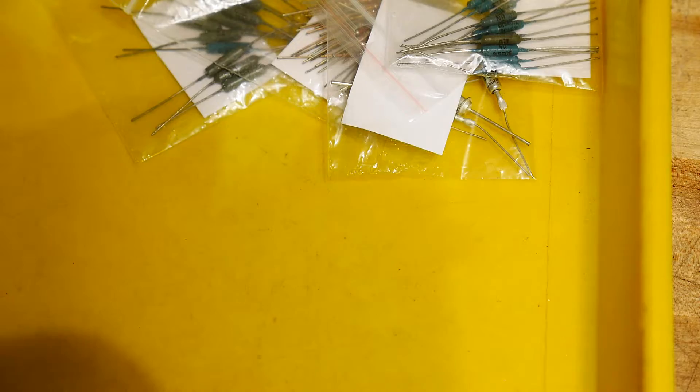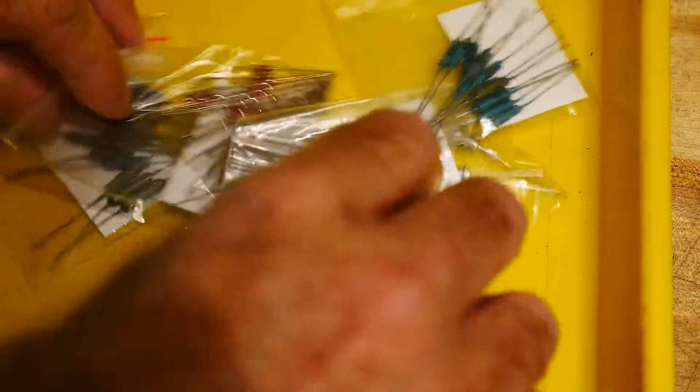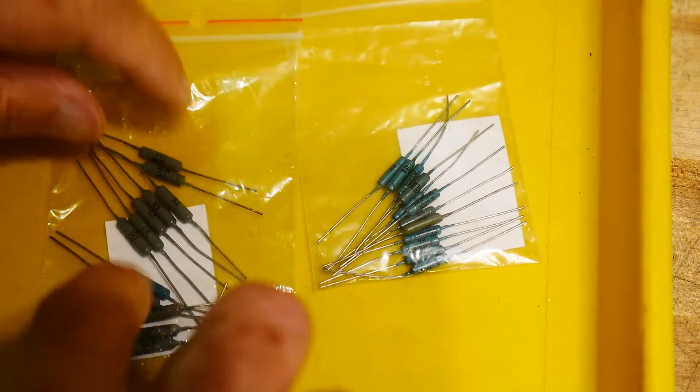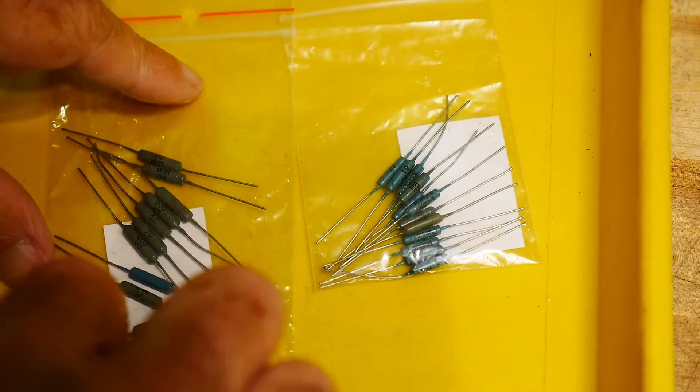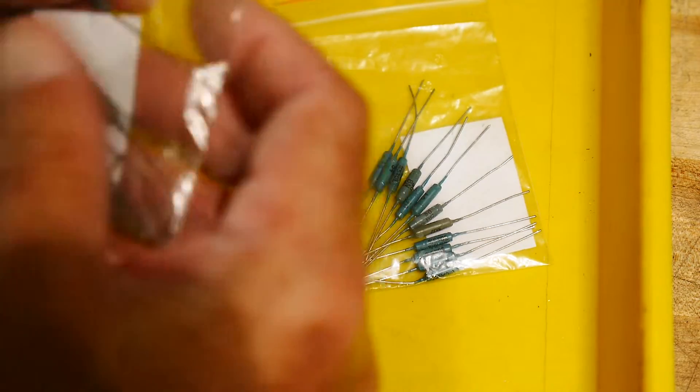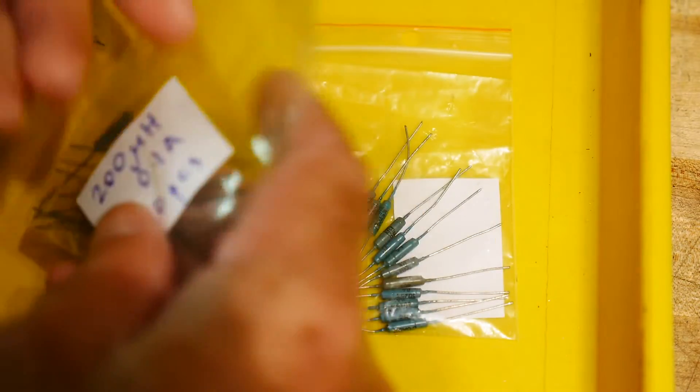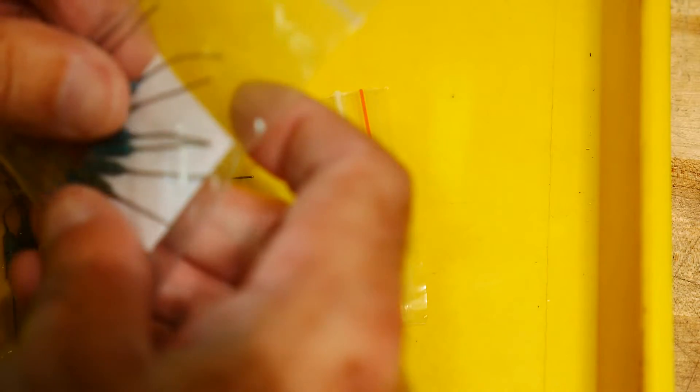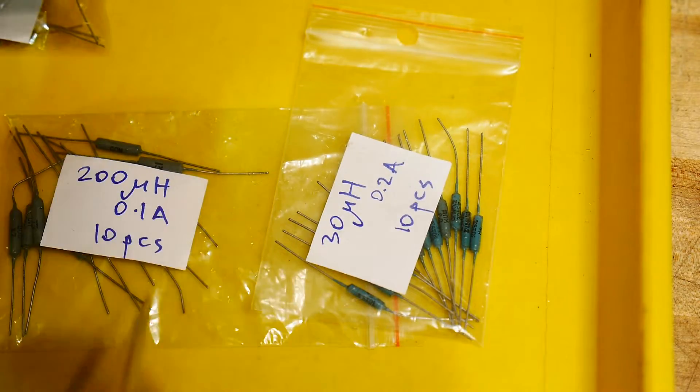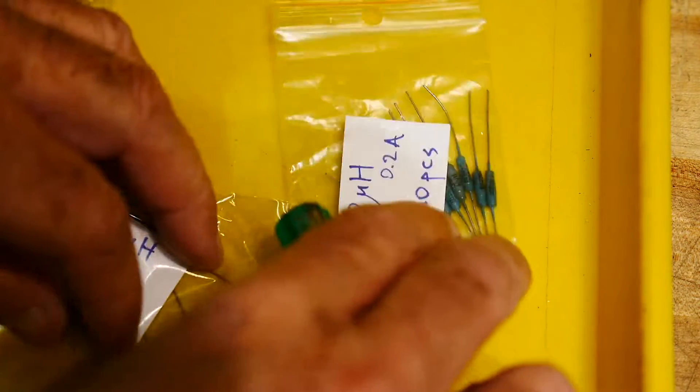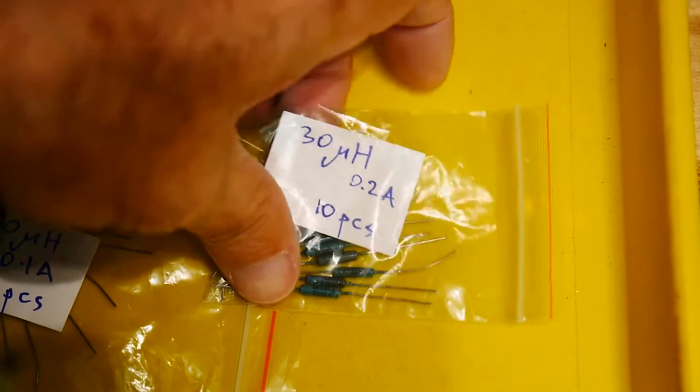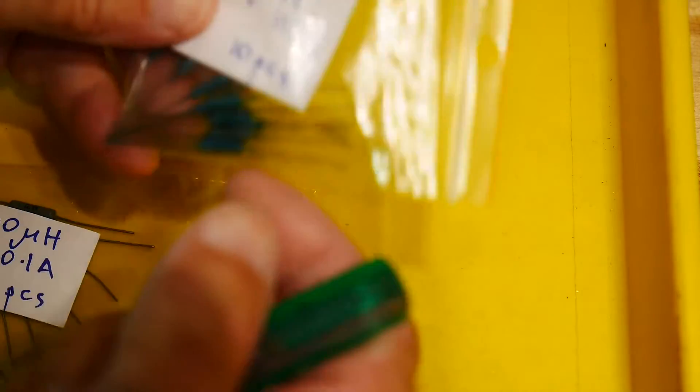Then I got some resistors, take a look at those. These are very interesting looking resistors, they almost look wire wound as well, they're quite large. Oh no, these are not resistors, these are inductors, that's why they look strange. These are nice to have - 200 microhenries and 30 microhenries at 100 milliamps and 200 milliamps, good for RF circuits.